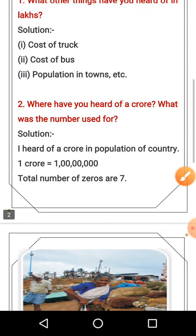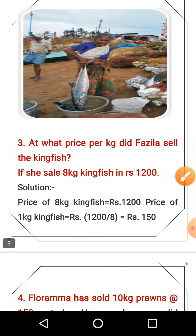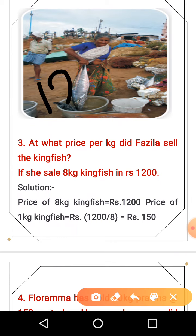Next question: there are some fisherwomen and they have fish sales, so there are some questions based on that. The very first question is: at what price per kg did Fazila sell the kingfish? She sold 8 kg of kingfish for 1,200 rupees.